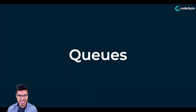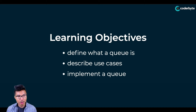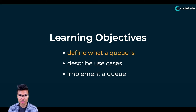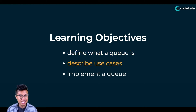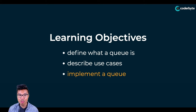Hey programmers, welcome back. In this lesson, I want to talk about the queue data structure. I want to define what a queue is and differentiate it from other data structures, describe common applications and use cases, and by the end of this lesson, implement a queue in two different ways — using an array as well as with a linked list.